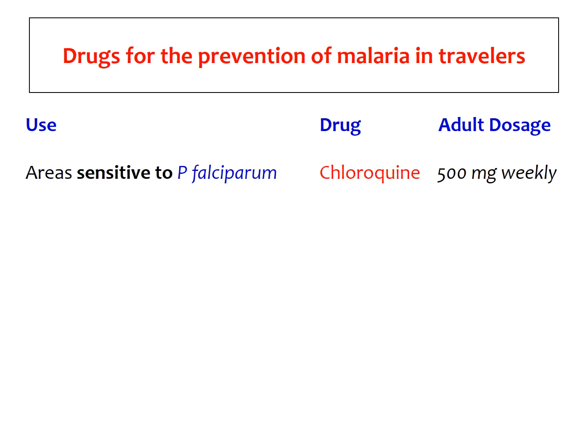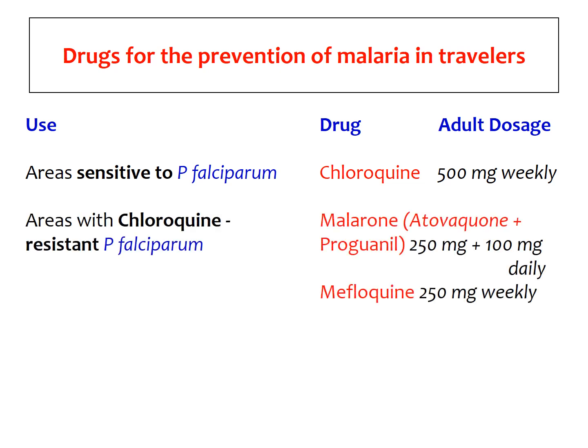For prevention of malaria in travelers: in those areas where Plasmodium falciparum is still sensitive to chloroquine, we use chloroquine in a dose of 5 mg per kg weekly, repeated after 7 days. In areas where chloroquine-resistant Plasmodium falciparum infection is present, we use a combination of atovaquone with proguanil under the name Malarone in the ratio of 250 mg and 100 mg respectively, or we can use mefloquine 250 mg weekly.